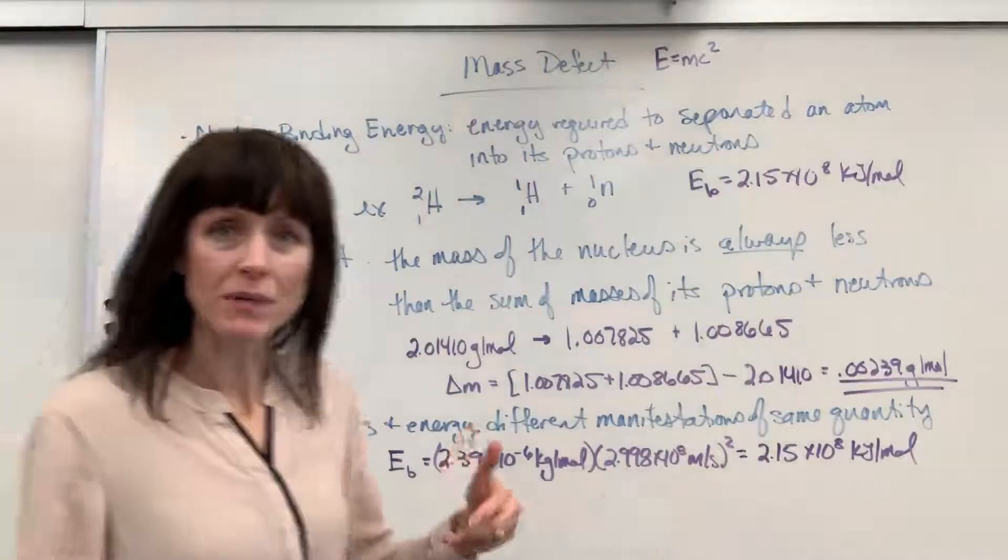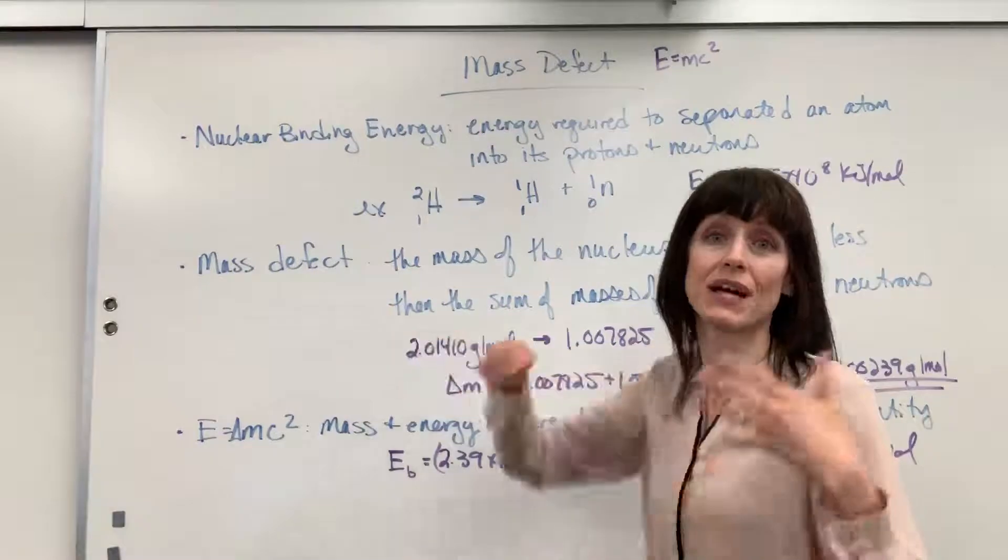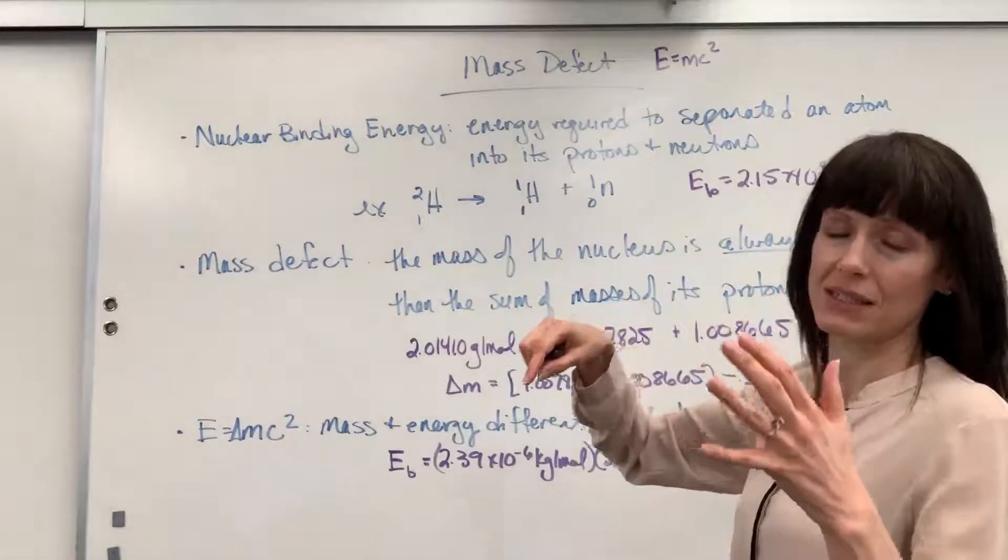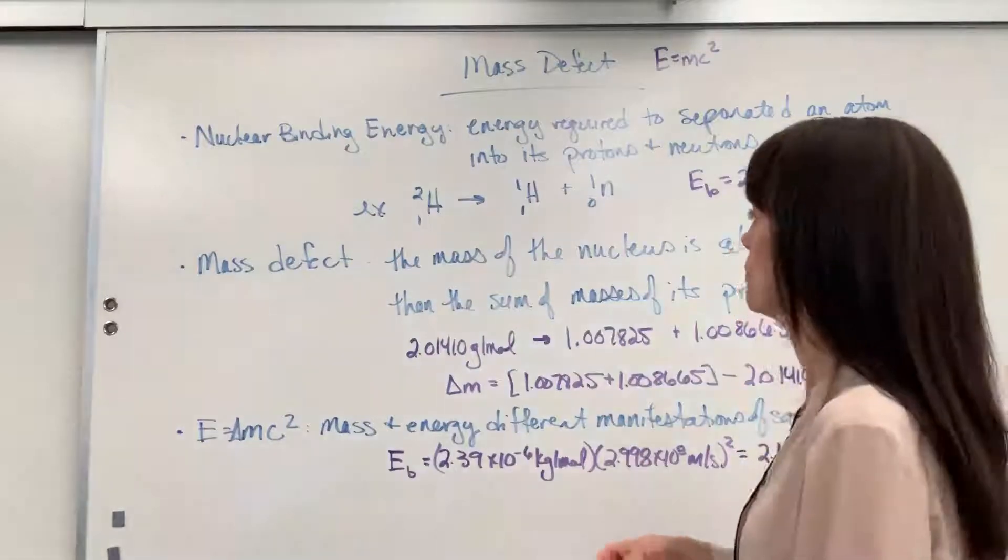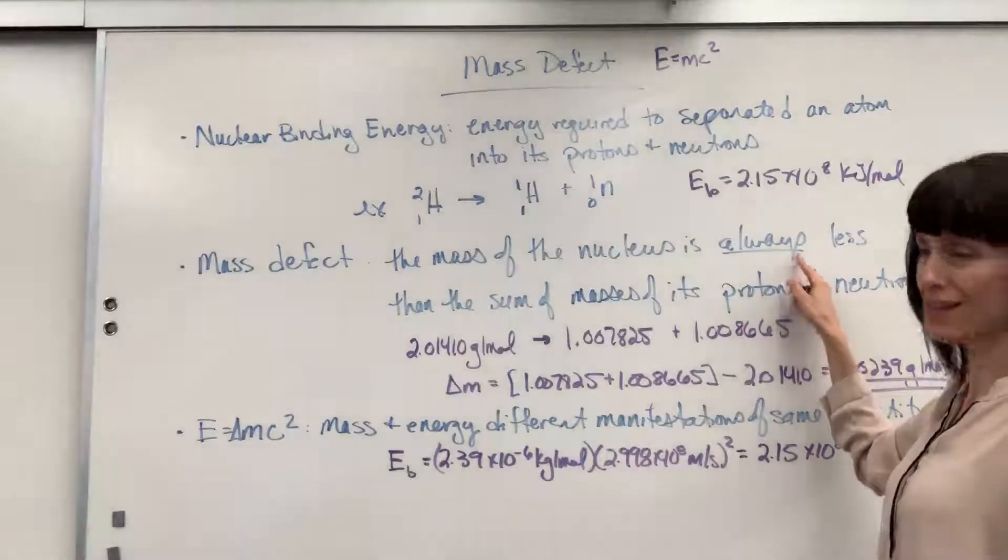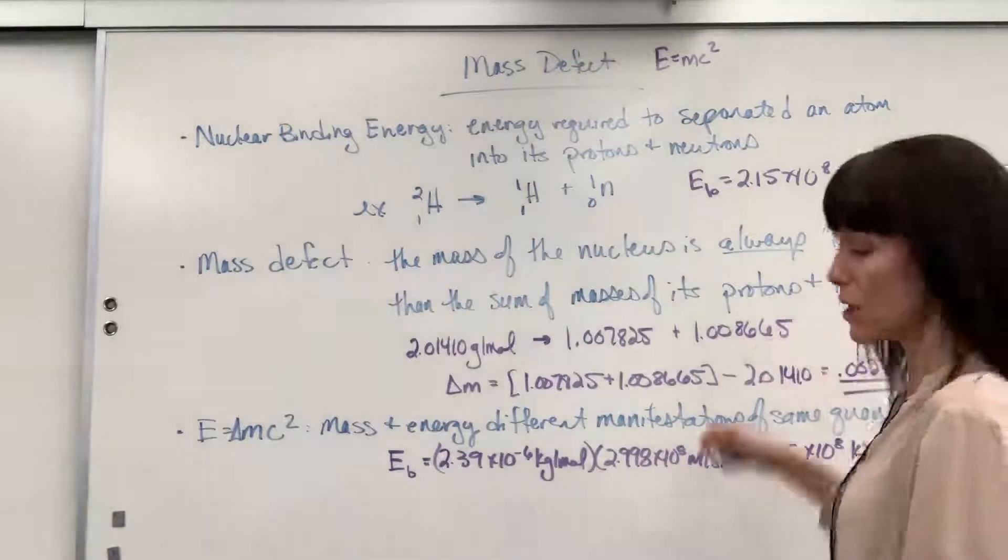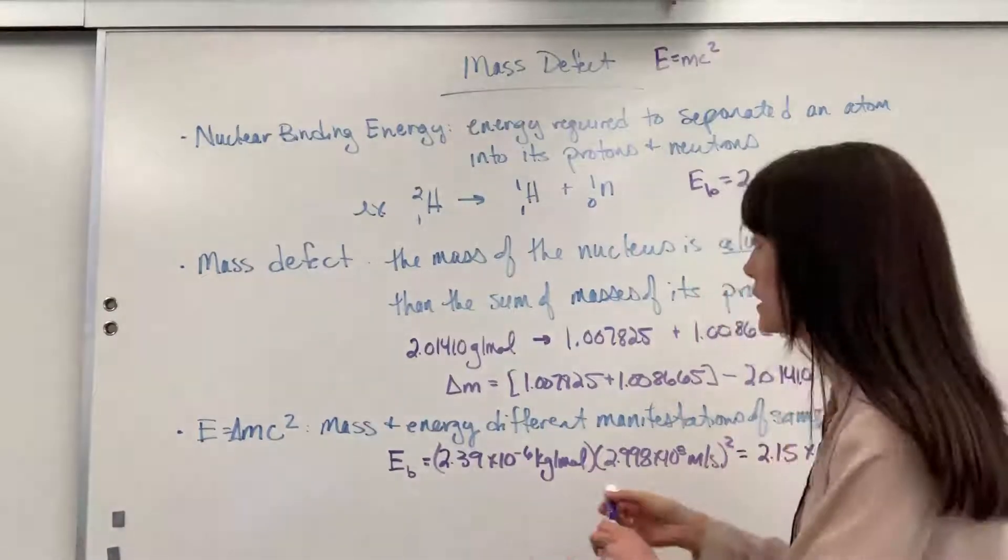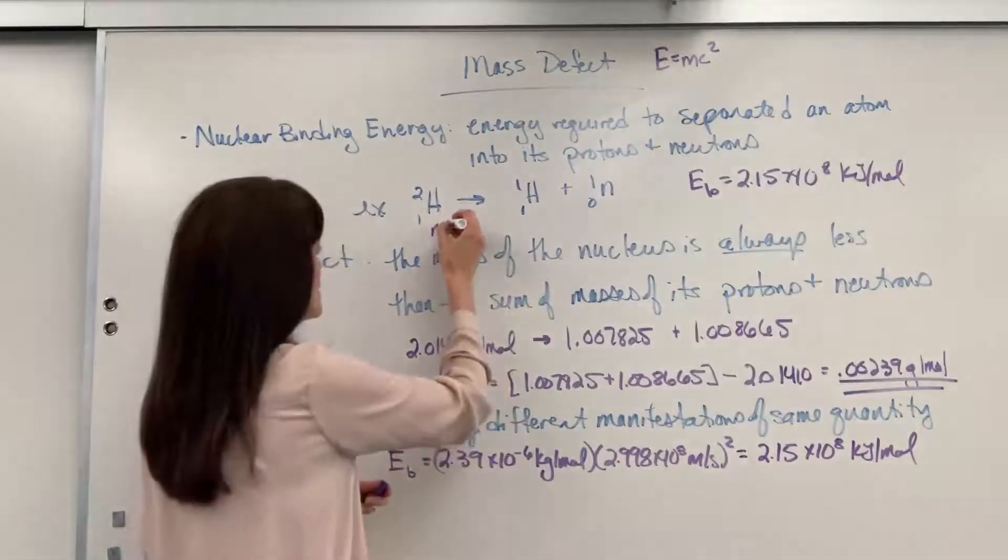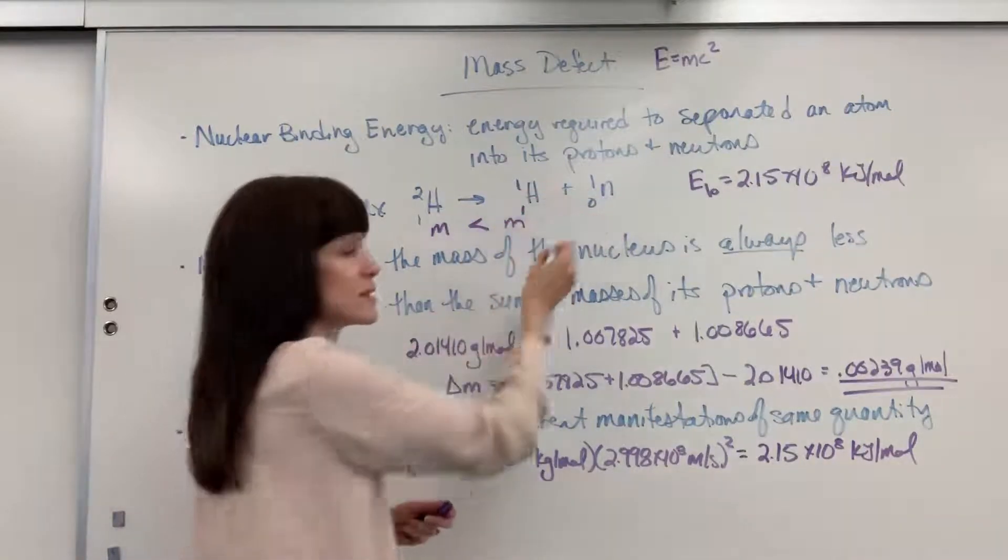Now, from experimental observation, scientists discovered this mass defect, and it was Einstein that explained what it was. So here's the mass defect from experimental observation. The mass of the nucleus, so I'm looking right here at that deuterium, is always less than the sum of the masses of its protons and neutrons. So if I was to do an inequality for masses, the mass of the deuterium is going to be less than the mass of the proton plus the neutron.